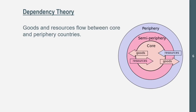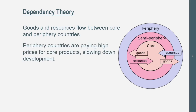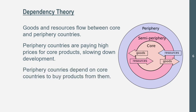Now we're going to get into Dependency Theory, which ties into Wallerstein's World Systems Theory with its three categories. It states that goods and resources flow between core and periphery countries. Periphery countries pay high prices for core products, which slows down their development, while core countries pay lower prices for periphery goods and resources. Since periphery countries spend so much buying from the core, their development is slowed. They also depend on core countries to buy their products — so the money they earn goes right back to buying core country goods. Hence the term 'dependency theory' — they're all interdependent.